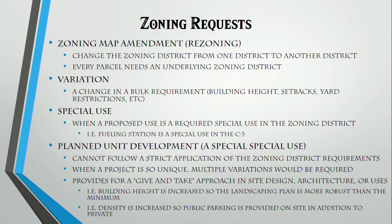This is where the board gets involved — approving ordinances after they've gone through planning and zoning and staff review. There are a few key terms: a zoning map amendment, also referred to as rezoning, is a change from one district to another. Every parcel needs an underlying zoning district. A variation is a change in bulk requirements — for example, a side yard setback required at six feet but the building is at five; that's a one-foot variation.